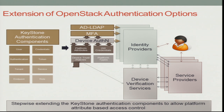There is a typical identity provider / service provider model — think Ping, Shibboleth, and others. The piece I'm most interested in is how you can locally add platform attributes as you build the local authentication system and then integrate it with the identity management system that exists today. One key component is device verification services, because device attributes are not very easily understood — for instance, how do you map Xen versus KVM to a more-secure or less-secure classification?